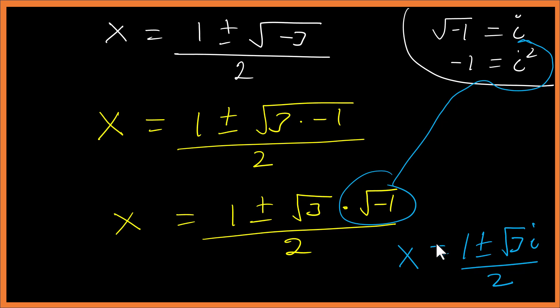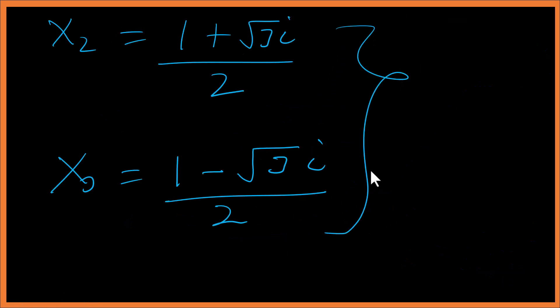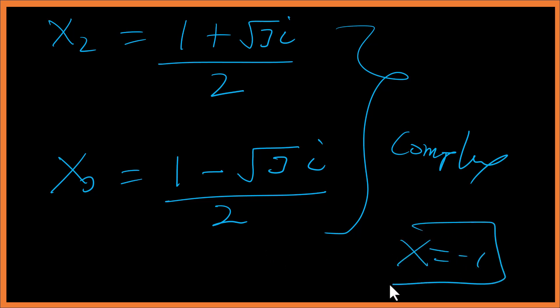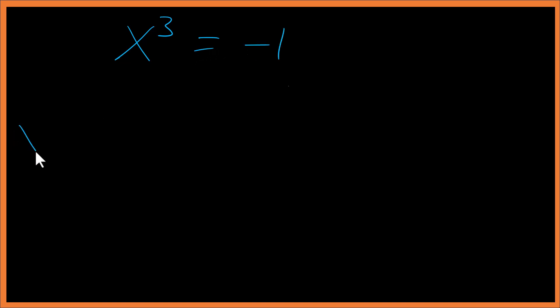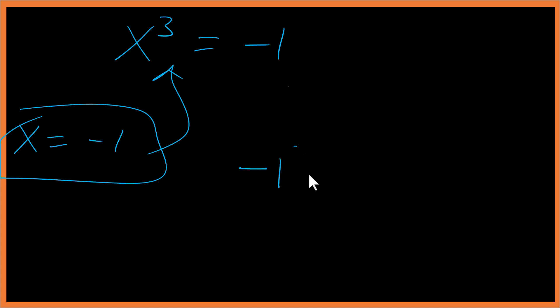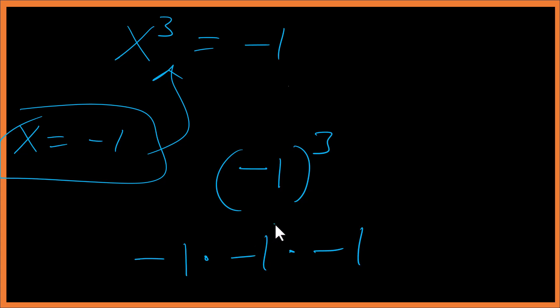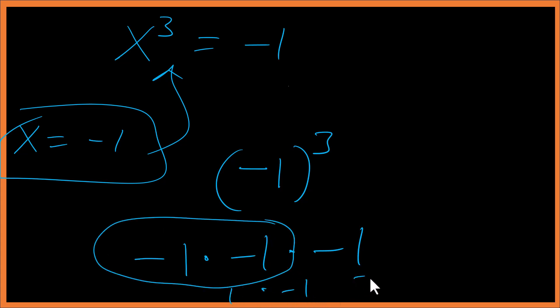So these remaining two solutions are complex. Let's stick to x equals negative one and verify it satisfies the original equation x cubed equals negative one. Plugging in: negative one cubed equals negative one times negative one times negative one, which equals positive one times negative one, which equals negative one. That checks out.